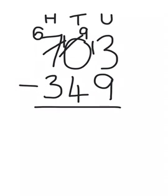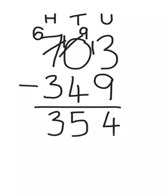We can now go on as usual, so starting with our units column, 13 take away 9 equals 4. In our tens column, 9 take away 4 is 5, and in our hundreds column, 6 take away 3 equals 3, and so our answer is 354.